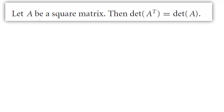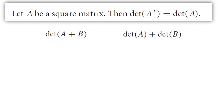We just learned that for a square matrix, the determinant of its transpose is equal to the determinant of the matrix. Now I expect you to ask: what if we have a summation of two matrices? What's the relation between the determinant of A plus B and the determinant of A plus the determinant of B?